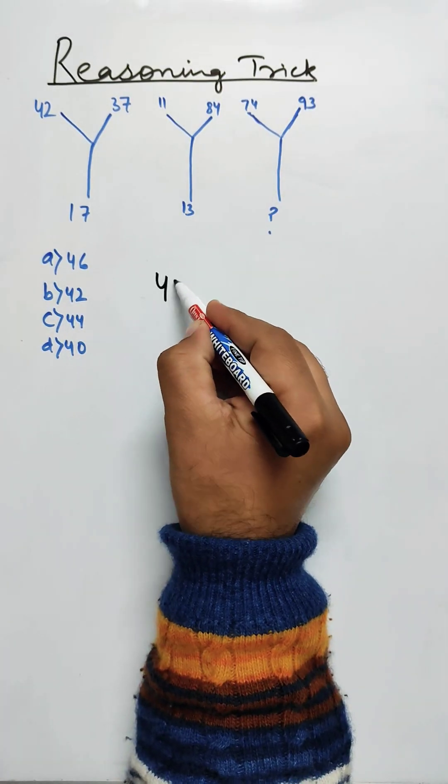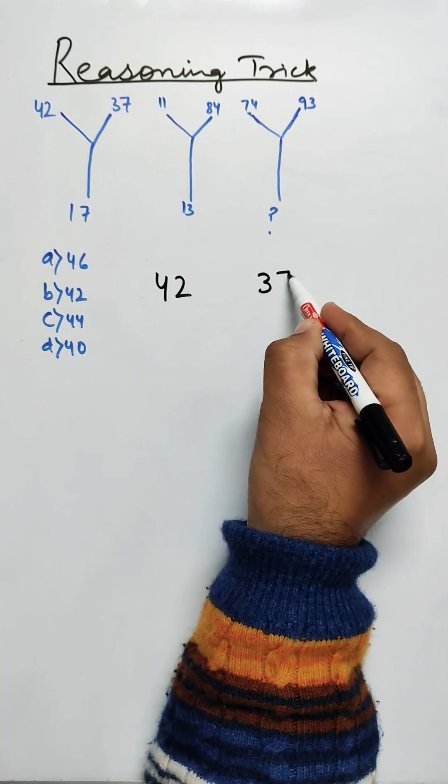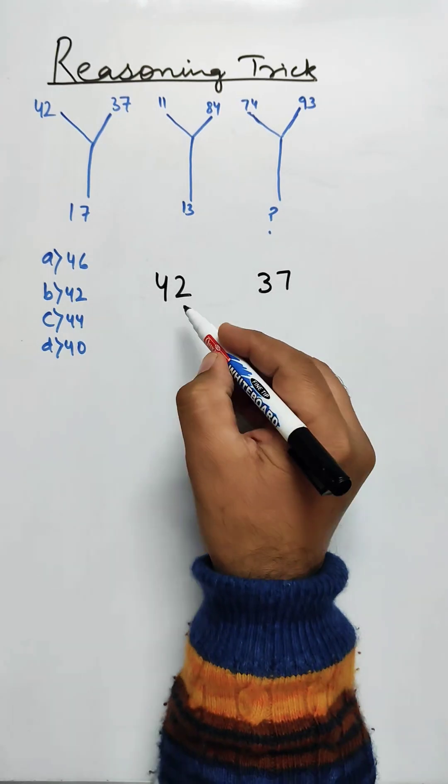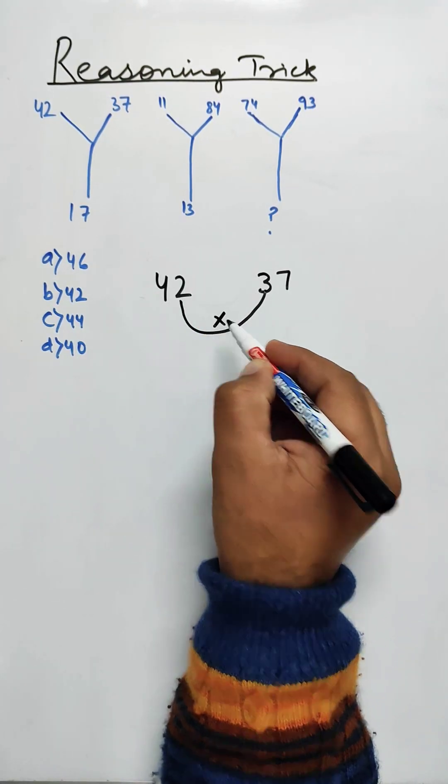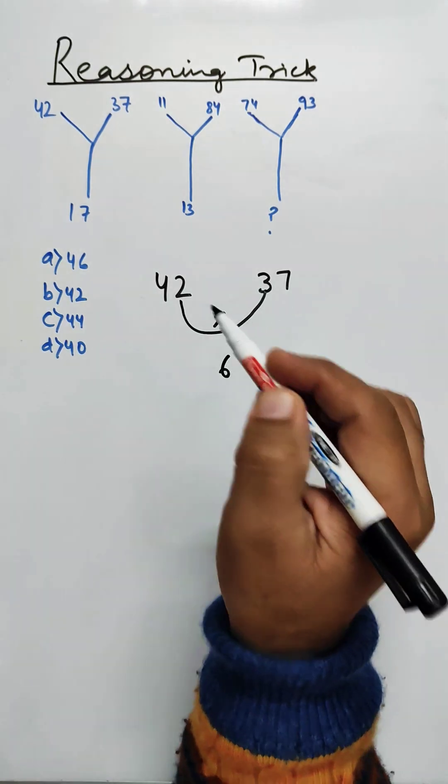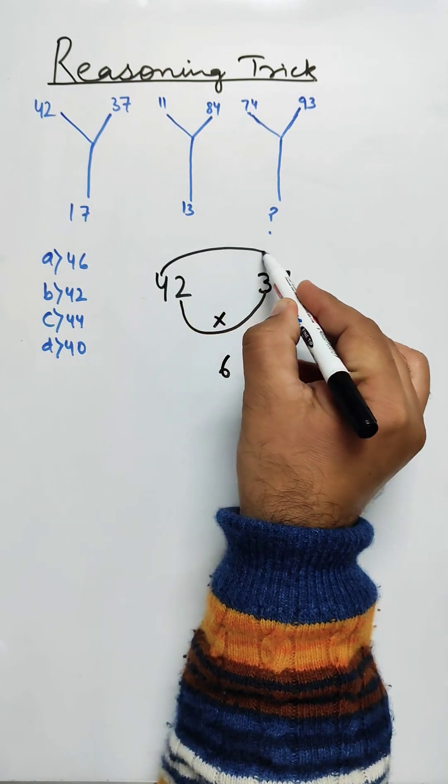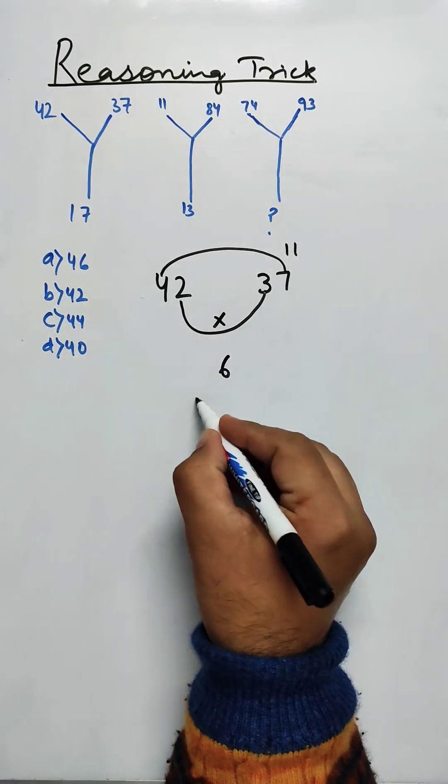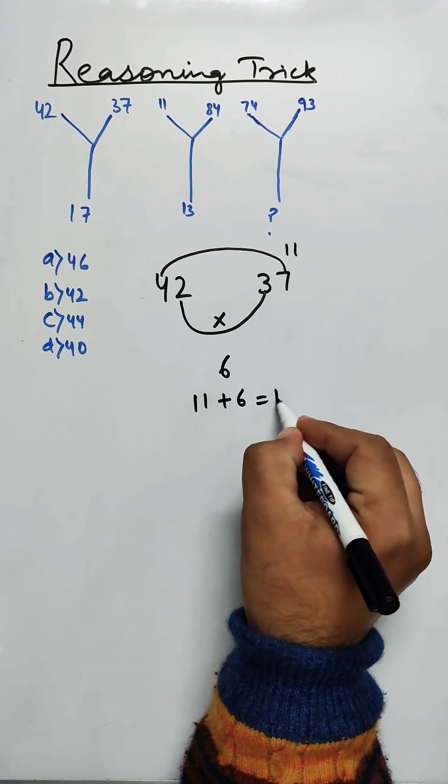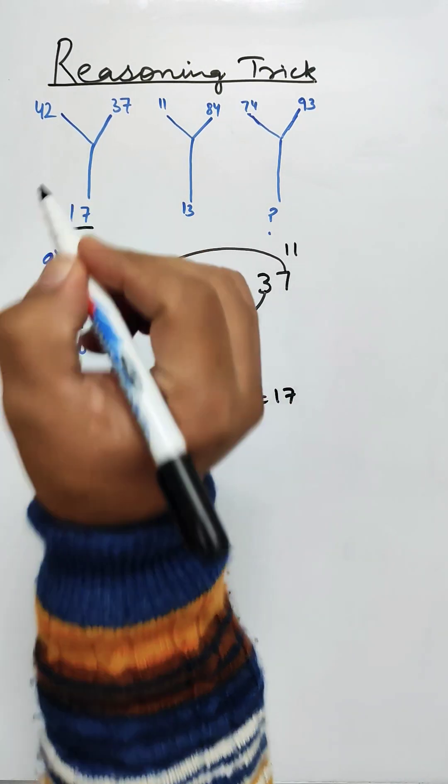Now let us see 42 and 37. If we multiply the inner terms, 2 and 3, we get 6. And if we add 4 and 7, we get 11. 11 plus 6 is 17. We have 17 here.